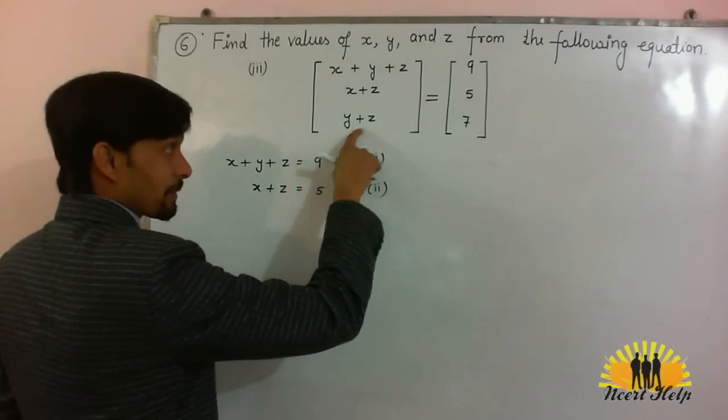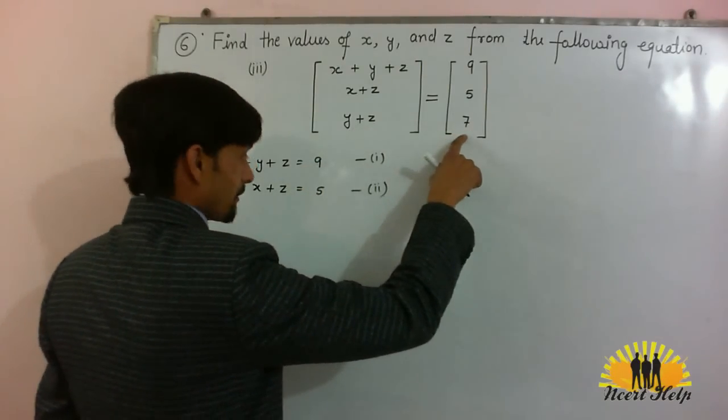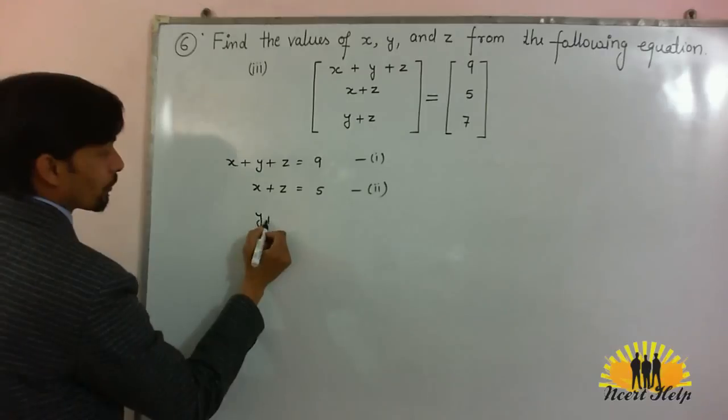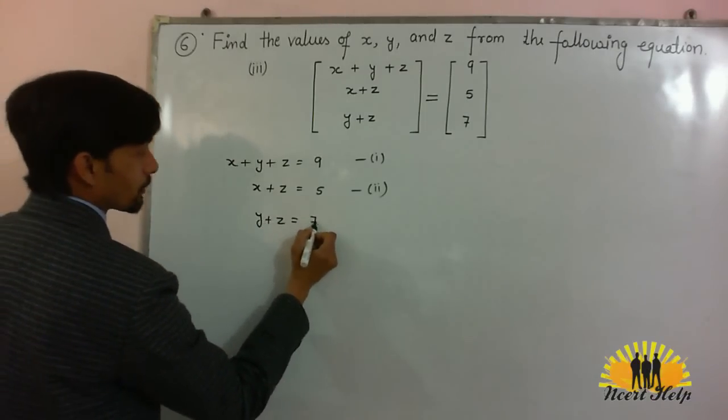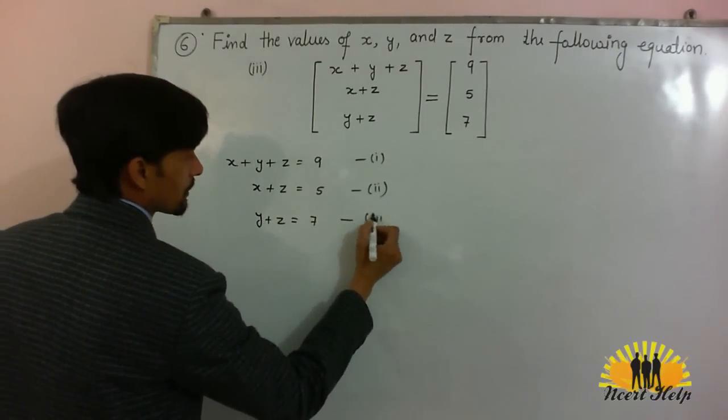And here y plus z, but in this matrix it is 7. So we have y plus z is equal to 7. Equation number 3.